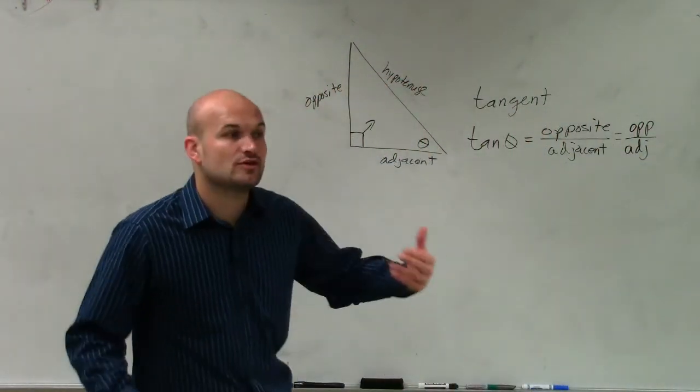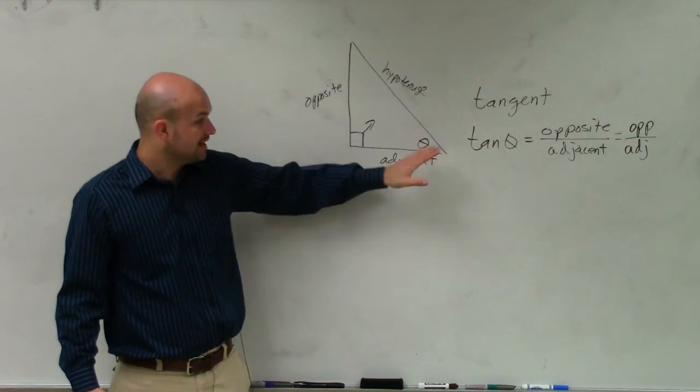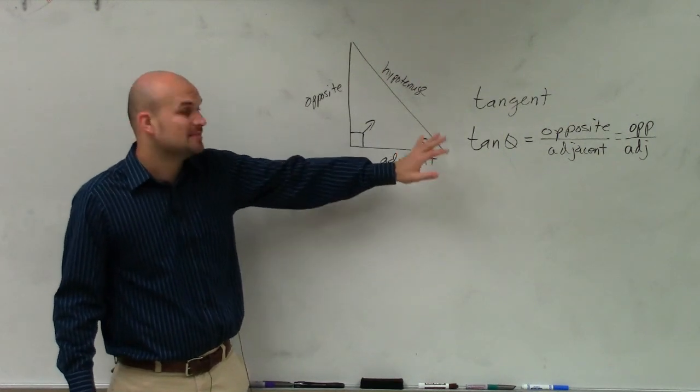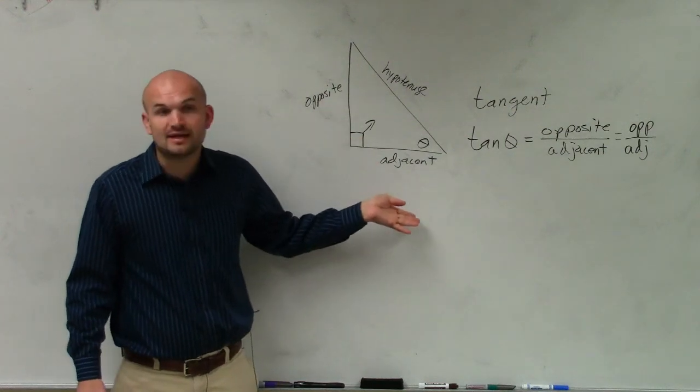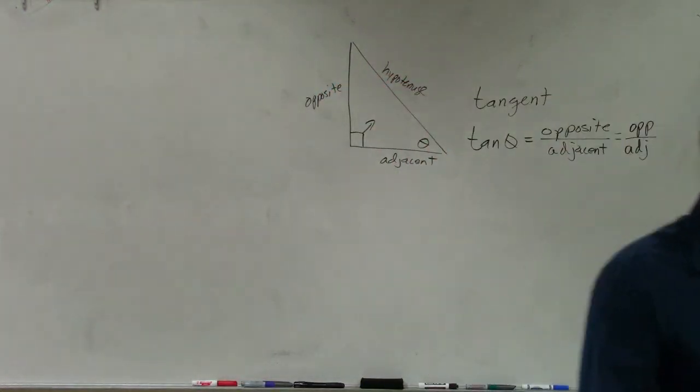And again, that's just going to be the ratio. So the tangent of an angle, which we don't know this angle, is going to be equal to the ratio of the length of the opposite side divided by the length of the adjacent side.